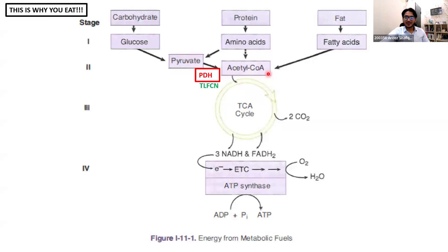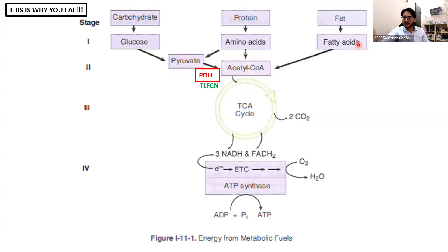That pyruvate is made into acetyl-CoA by an enzyme called PDH or pyruvate dehydrogenase. The same thing happens for proteins — they get broken down into amino acids in the GI tract, the amino acids get absorbed, they enter cells, and for energy they're made into acetyl-CoA or pyruvate, which then gets converted into acetyl-CoA. In your GI lectures, you studied how you ingest triglycerides — they're broken down by pancreatic lipase, then surrounded by bile to form micelles, those micelles are absorbed, and fatty acids enter cells.